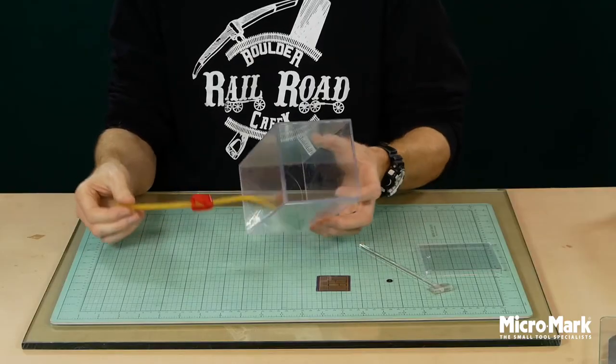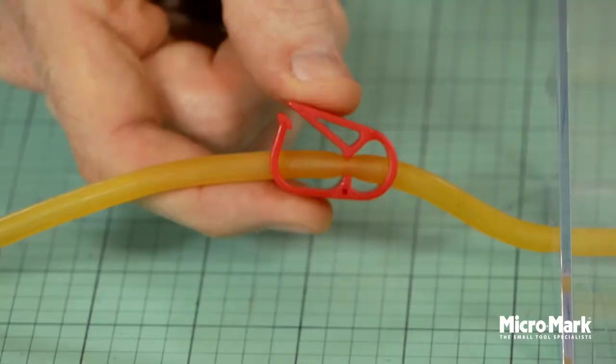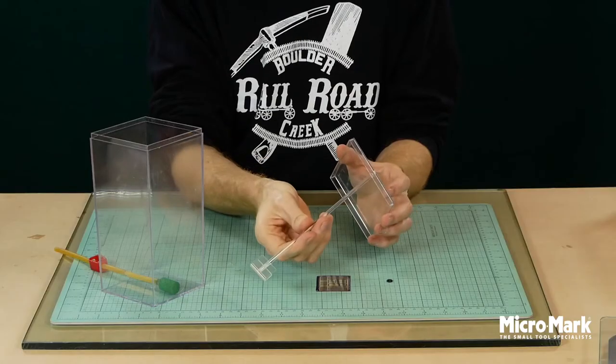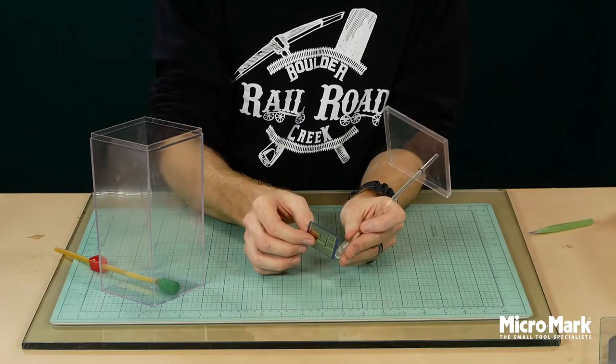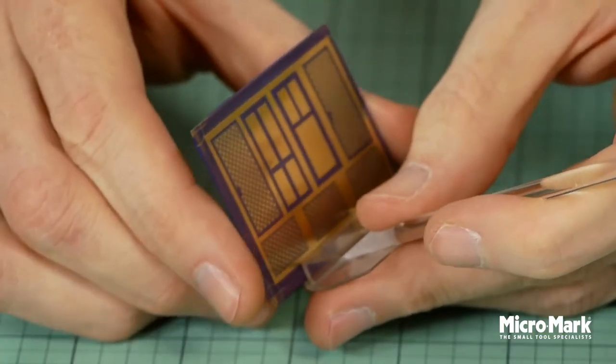The etching tank is prepared following the supplied instructions. It's pretty straightforward. The metal is pressed into the clip and test fitted into the tank.